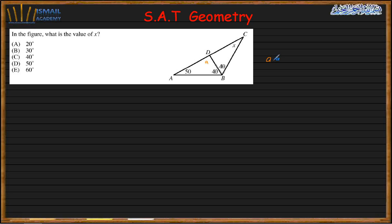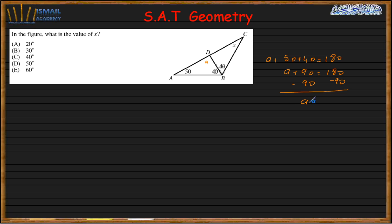We know that a plus 50 plus 40 equals 180, since the sum of the internal angles of a triangle is always 180. So this means a plus 90 equals 180, and if we subtract 90 from both sides, we get a equals 90. That means this is a right triangle.